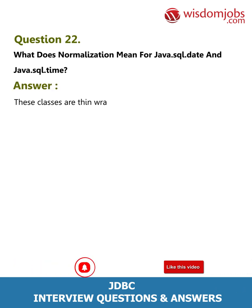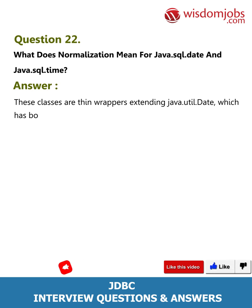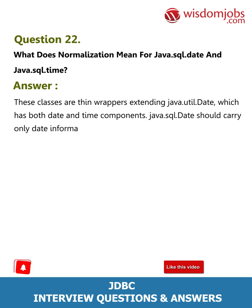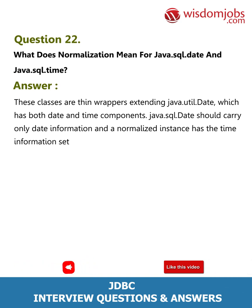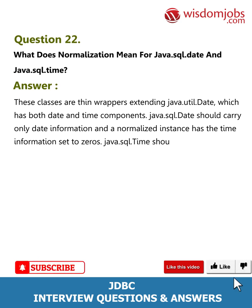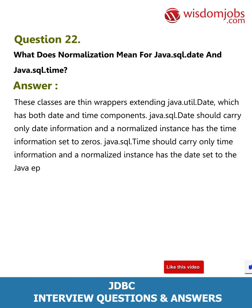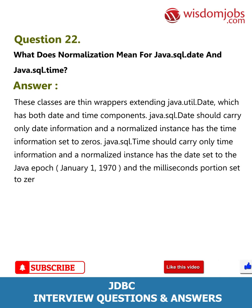Question 22: What does normalization mean for java.sql.Date and java.sql.Time? Answer: These classes are thin wrappers extending java.util.Date, which has both date and time components. java.sql.Date should carry only date information, and a normalized instance has the time information set to zeros. java.sql.Time should carry only time information, and a normalized instance has the date set to the Java epoch — January 1st, 1970 — and the milliseconds portion set to zero.